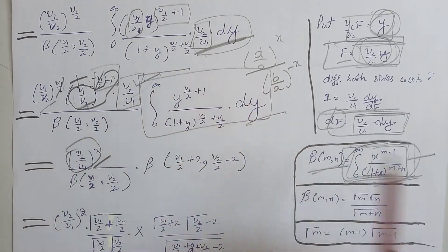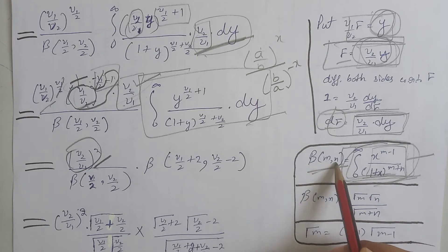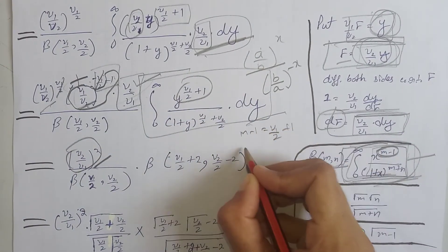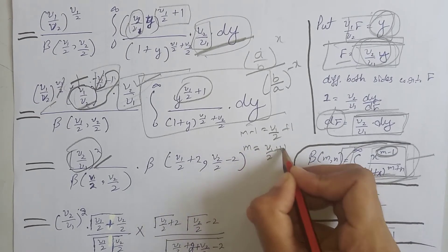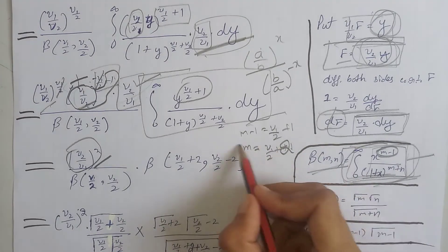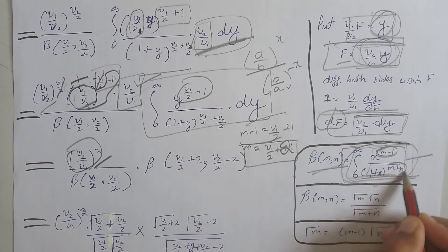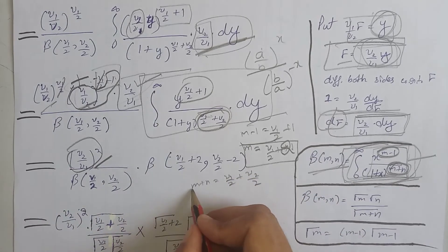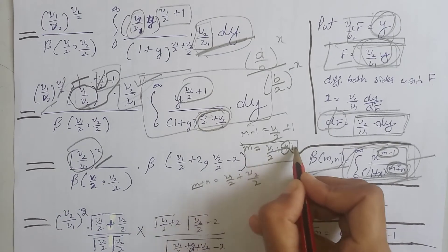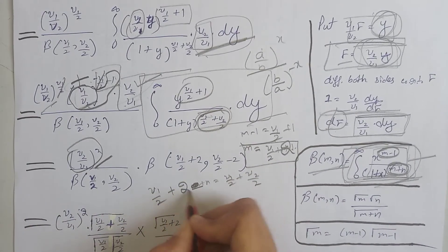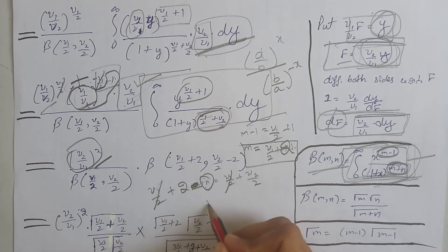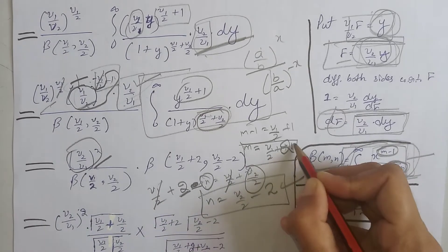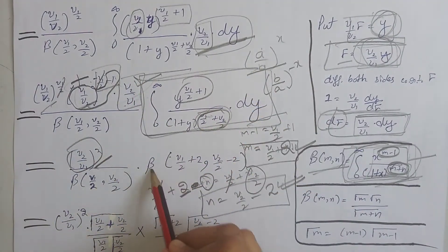Comparing with the beta function definition, we find m and n. Comparing the first exponent: m minus 1 equals ν₁/2 plus 1, so m equals ν₁/2 plus 2. For n, we use m plus n equals ν₁/2 plus ν₂/2. Substituting m equals ν₁/2 plus 2, the ν₁/2 terms cancel, giving n equals ν₂/2 minus 2.